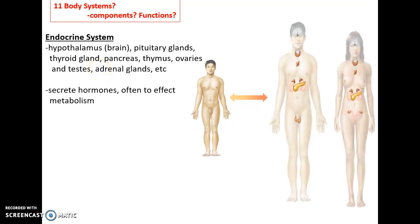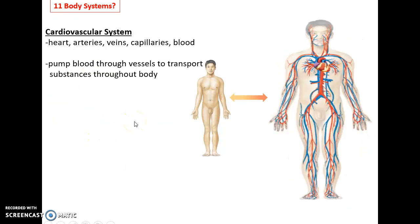The endocrine system includes all the glands and parts of the brain — pituitary glands, thyroid glands, pancreas, thymus, ovaries, testes, adrenal glands, etc. All these glands produce hormones, and some are involved in regulating metabolism. The cardiovascular system — heart, blood vessels, and blood — has the important job of the heart pumping blood through the vessels and transporting substances throughout the body.